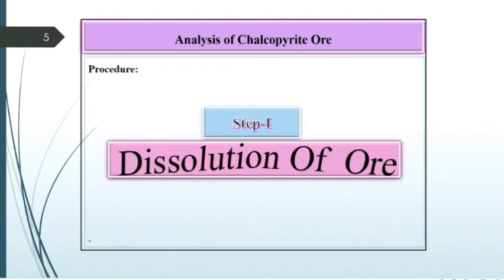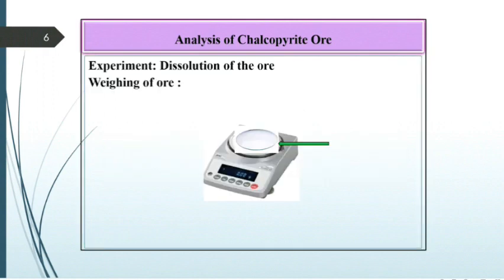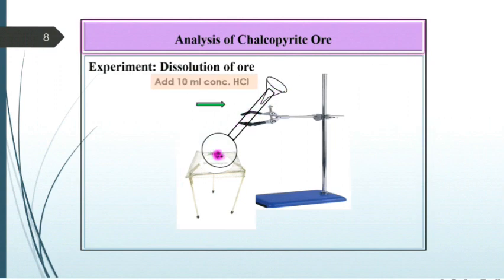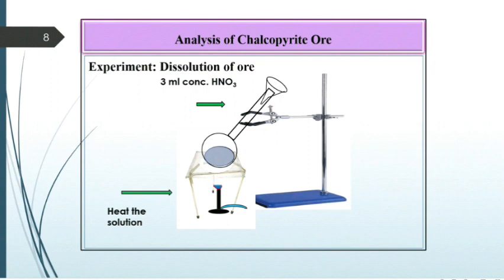Step 1: Dissolution of ore. Weigh about 0.3 g of ore and then transfer it into a Kjeldahl flask. To this add about 10 ml concentrated HCl and 3 ml concentrated HNO3. Place a watch glass on top and heat the flask in a fuming cupboard on a low flame till the ore dissolves. If not, add a little amount of concentrated HCl and HNO3 and heat again. Repeat the procedure till the ore dissolves. In this step, metal chloride is formed and Cu+ is converted to Cu2+.